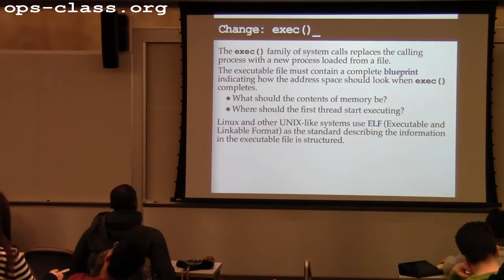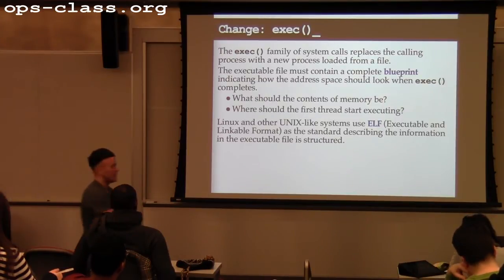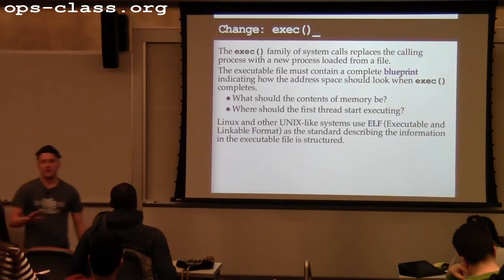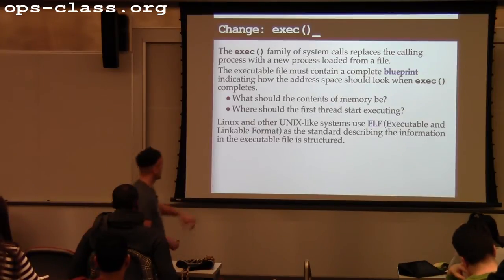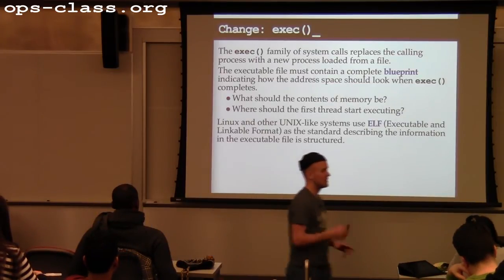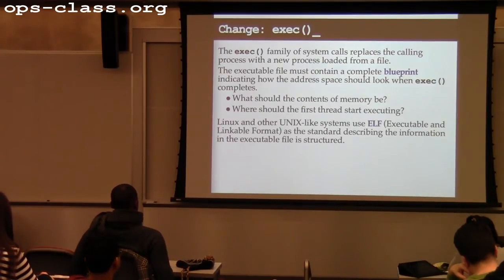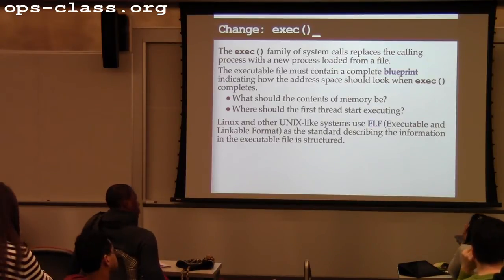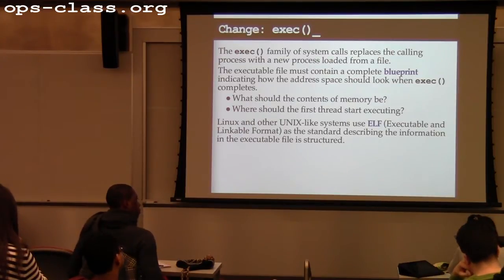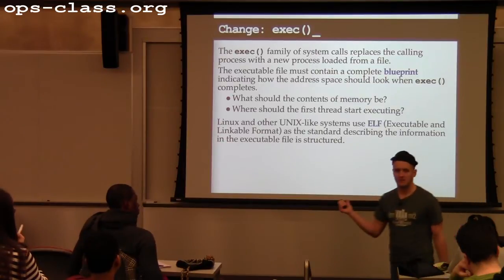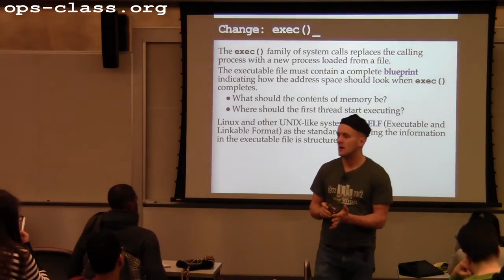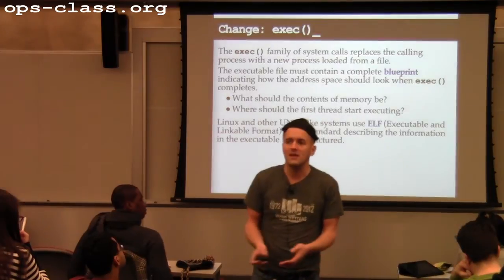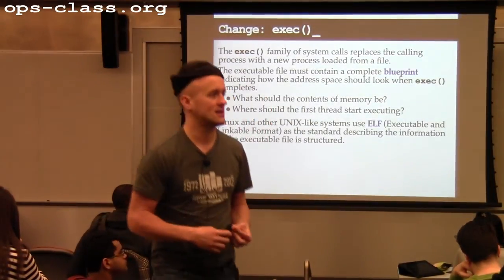Exec reads a file — in this case an ELF format executable — and the ELF format is designed to provide a complete description of what the new process wants to be like. The ELF file must describe what should be in memory when the process starts executing, and it must also contain an entry point — where the first thread in the process starts executing. The contents of the process are completely replaced according to the blueprint in the ELF file.